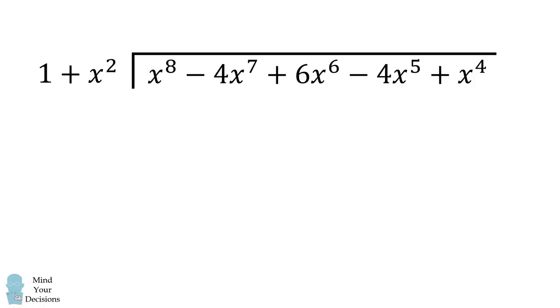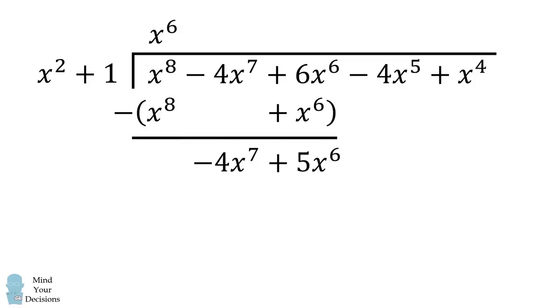We'll first rewrite 1 plus x squared as x squared plus 1. We want to eliminate the leading term. To do that, we'll multiply x squared plus 1 by x to the power of 6. We get the following result, which will subtract. We'll go ahead and do this calculation. We then want to bring down the next column.